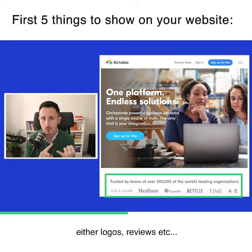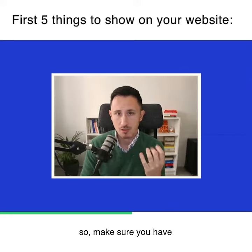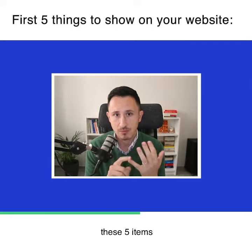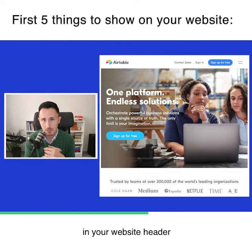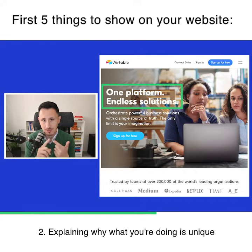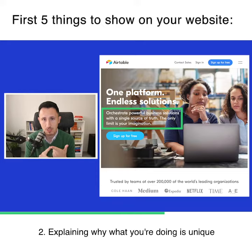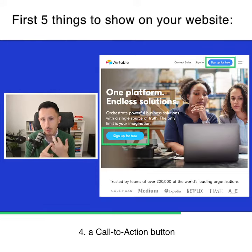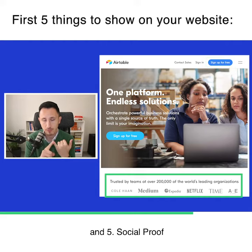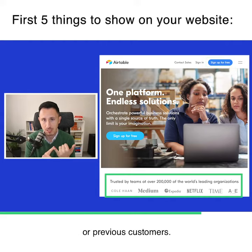Make sure you have these five items in your website header: a headline explaining why what you're doing is unique, a product shot or people using your product, a call to action button, and social proof through product reviews or previous customers.